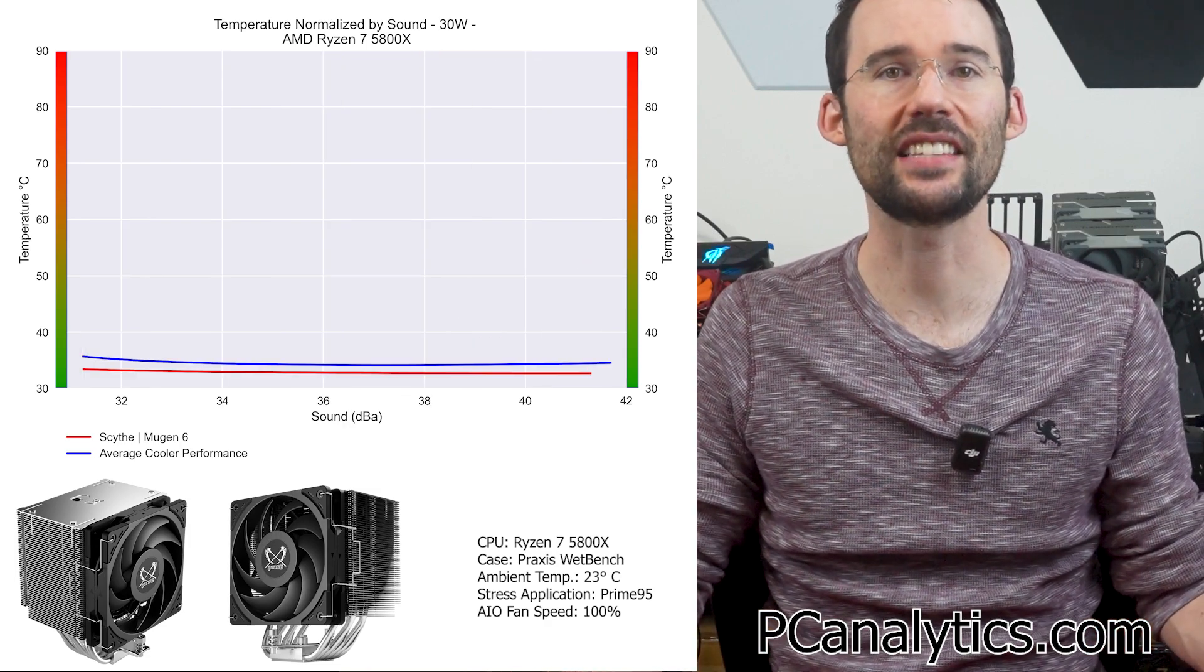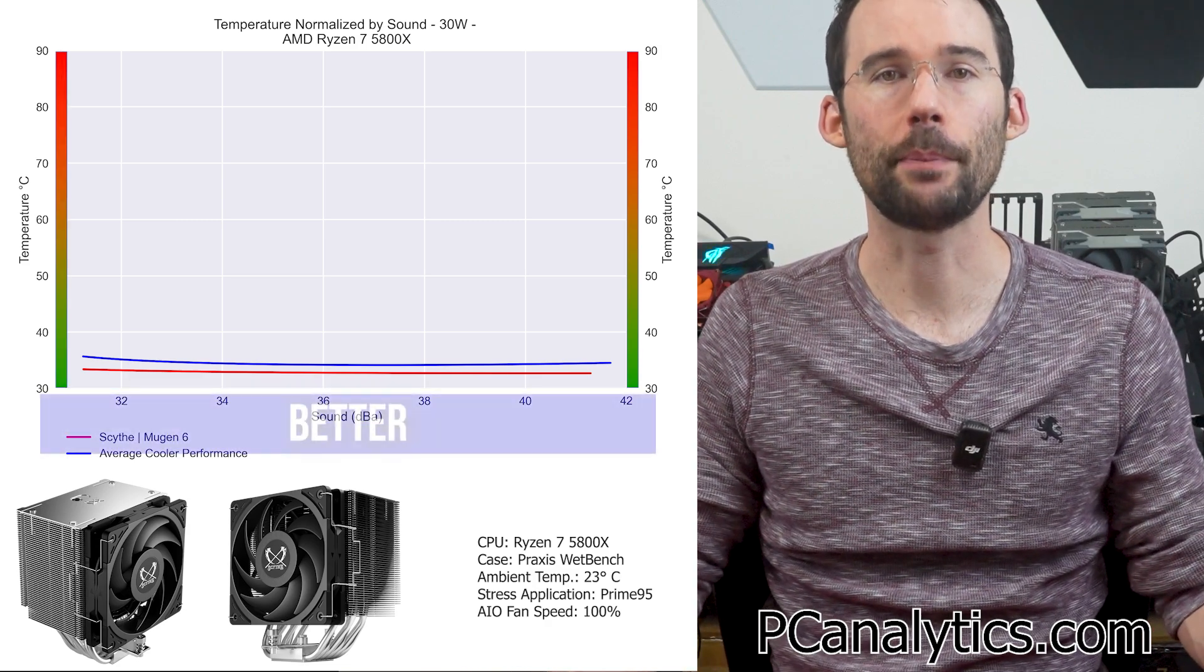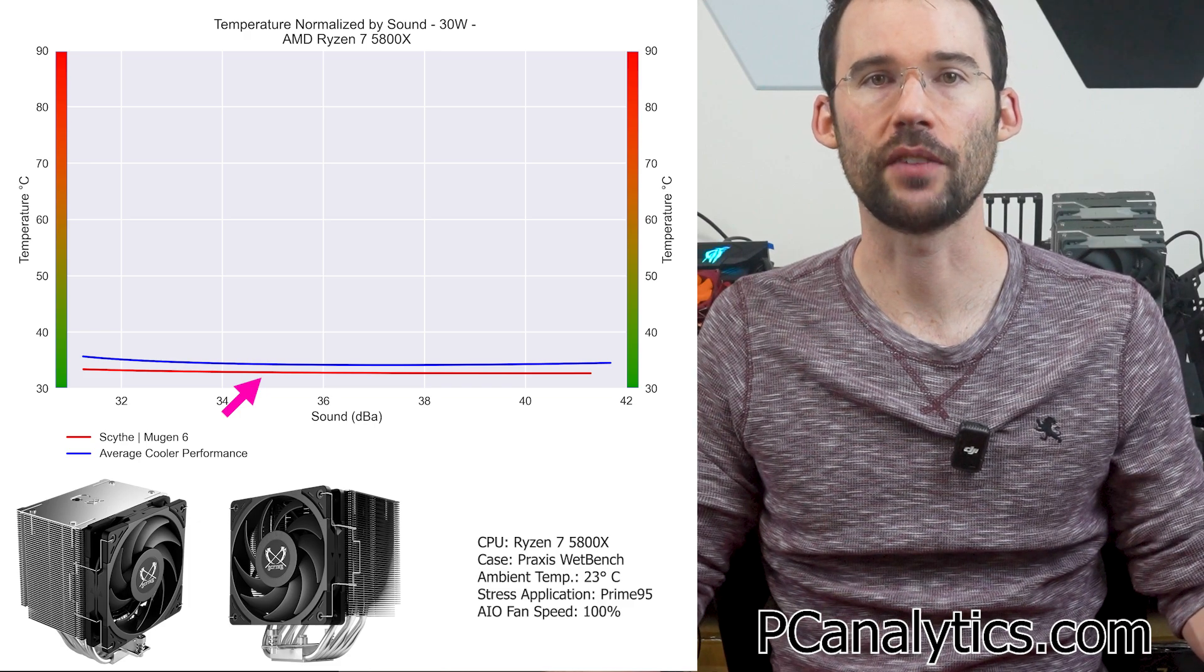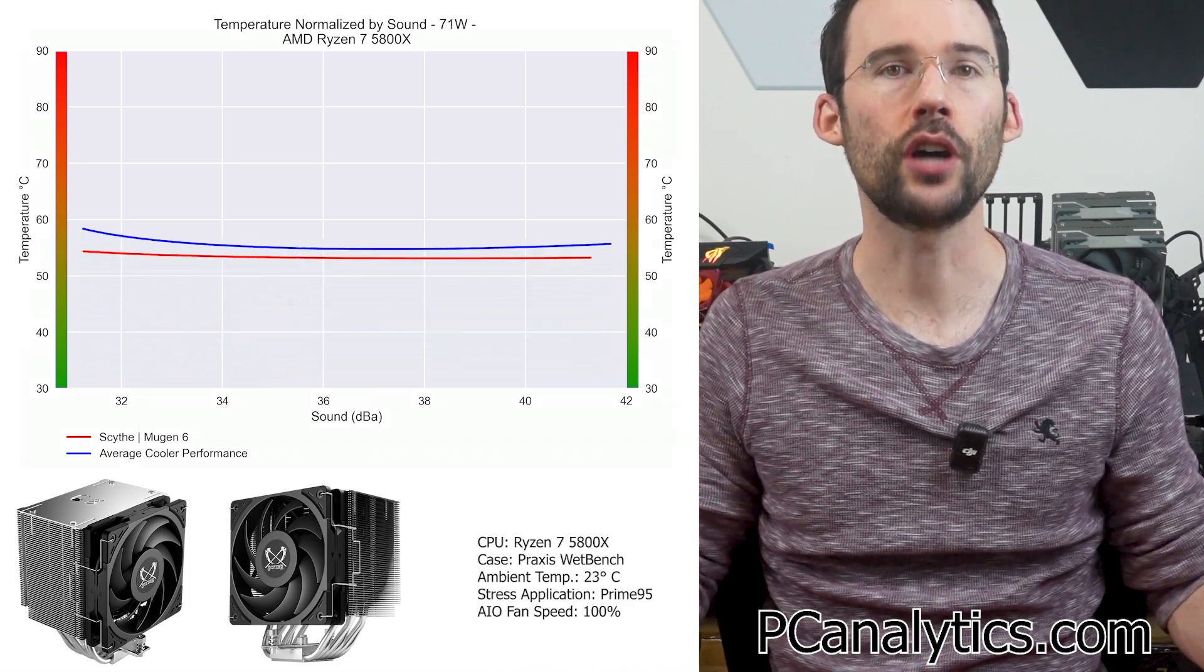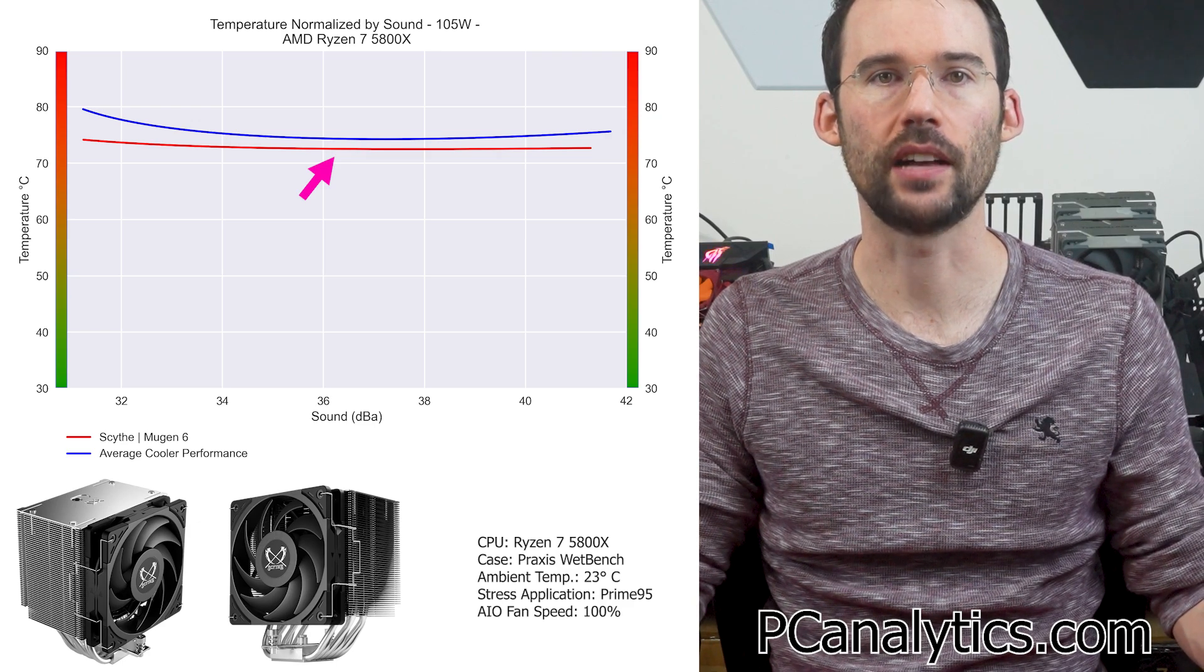In our second set of charts normalized by sound against the average cooler, we have temperatures on the left, noise on the bottom, with lower being better. At idle, we can see that the Mugen 6 provides slight cooling advantage for a given noise level. When we push the CPU to 105 watts, we can see that the Mugen 6 pulls ahead slightly at the lower noise levels.